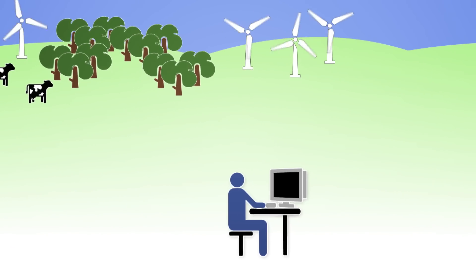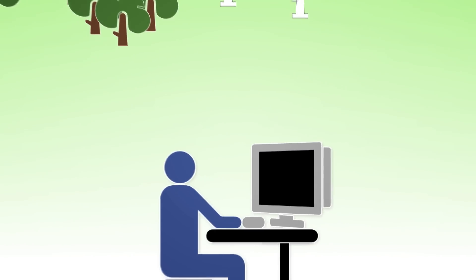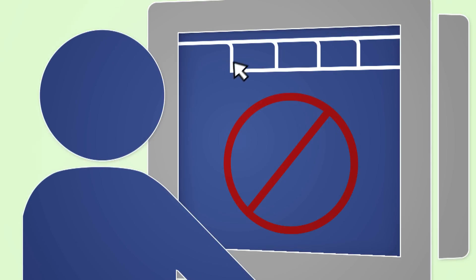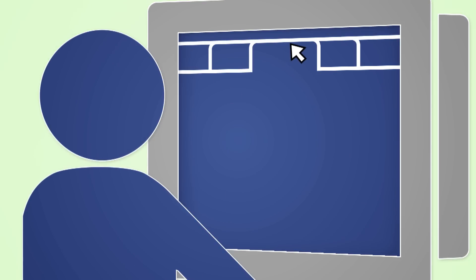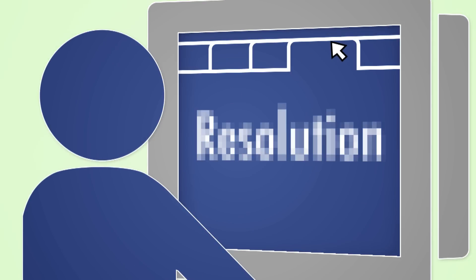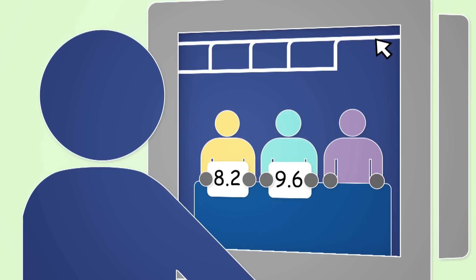First, we need information about the different services we get from the land. However, some of this information may not be available or may be incomplete. Some might be out of date or have the wrong resolution or represent subjective views which are hard to evaluate.